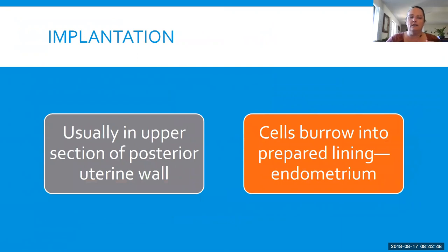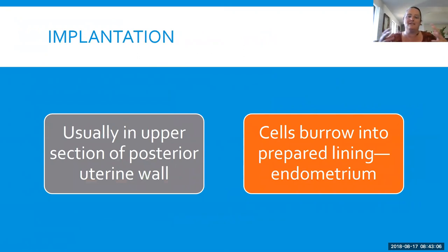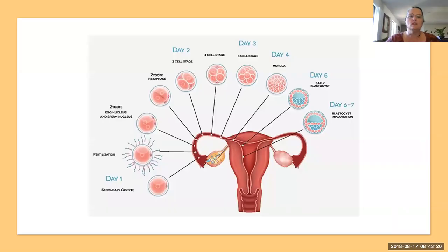Implantation hopefully happens in the upper section of the posterior wall of the uterus. That is when the cells start to actually burrow down into the lining of the uterus, which has not been expelled through a period this month. That's actually what our period is every month — we go through the cycle where the walls of the uterus get ready to receive a fertilized egg, and when that doesn't happen, it's shed, and that is what the period is.